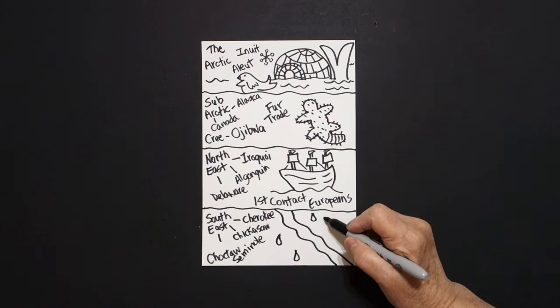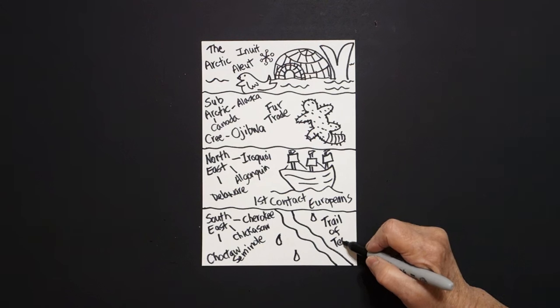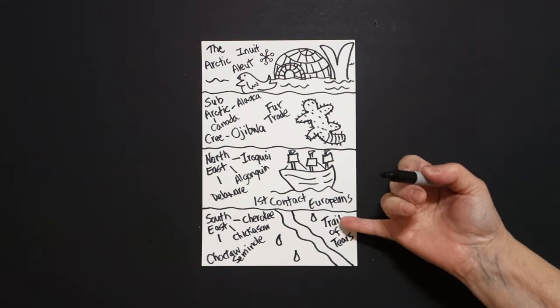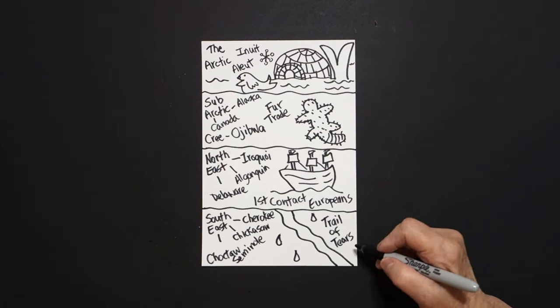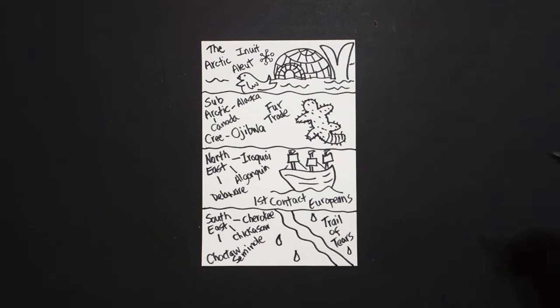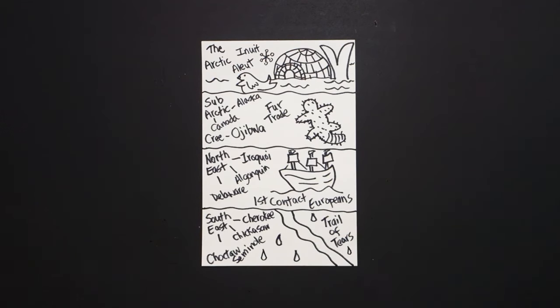This represents the Trail of Tears. As the Europeans moved in, they pushed the Native Americans out, put them on the Trail of Tears, which represented them being migrating off of their tribal lands onto an area where the Europeans, white people, colonials, put them so that they could take their land. Okay, let's see how we're going to color this in.